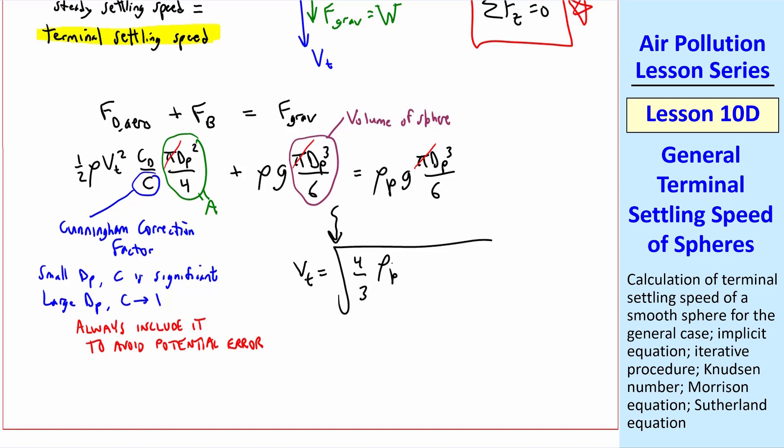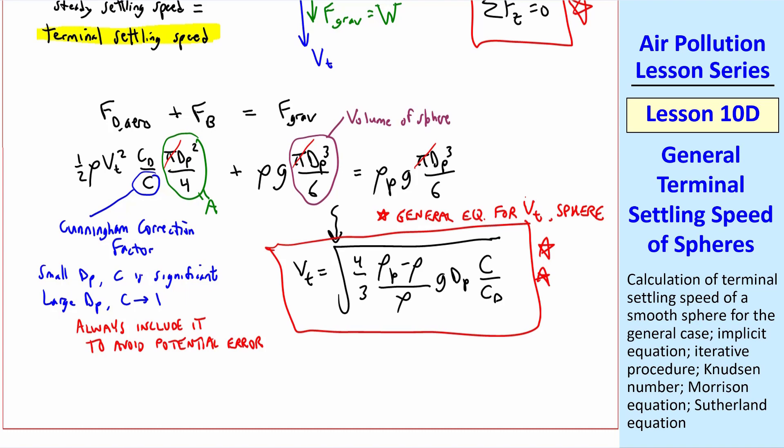we can solve for vt. vt is the square root of 4/3 times (ρp - ρ)/ρ, g, dp, and C/Cd. This is our general equation for vt of the sphere, the terminal settling speed.